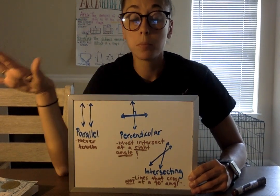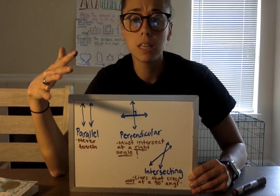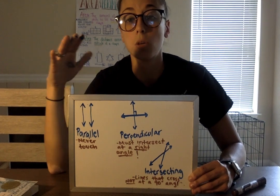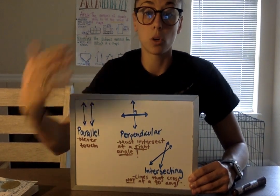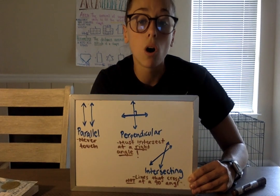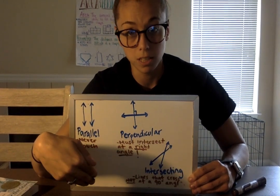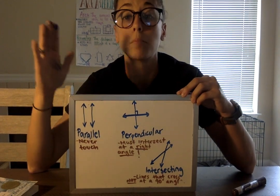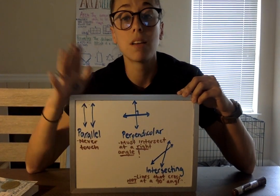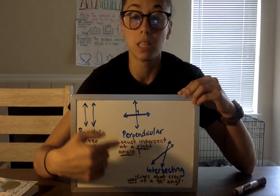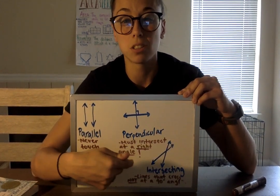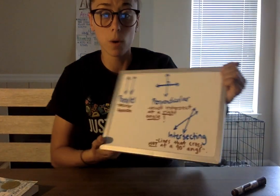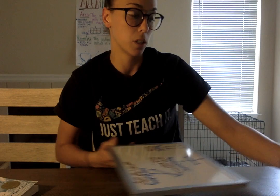Your independent work today is going to be super easy. It's just going to show you pictures of some lines and ask you: is it parallel, perpendicular, or intersecting? And then it's going to ask you to draw examples of each. Make sure you're looking back — I'm putting this on Google Classroom, save it in your camera roll so you don't get perpendicular and intersecting mixed up, because those are the two that will trip you up. And as always, email me if you have any questions.